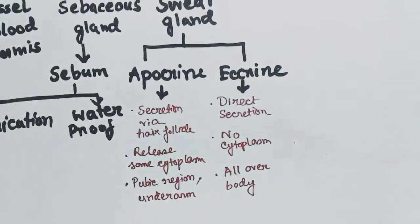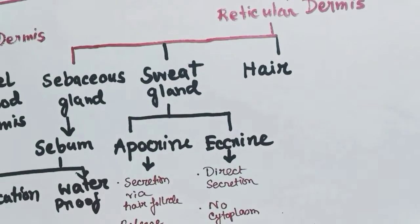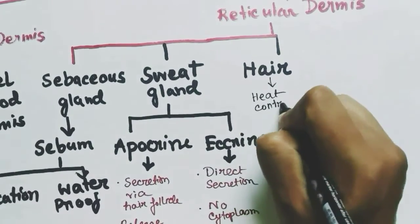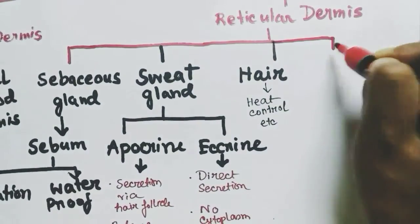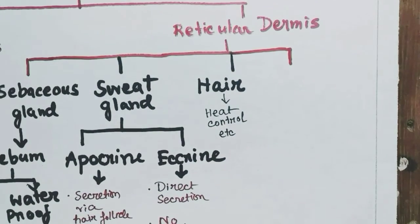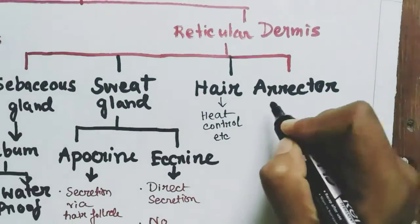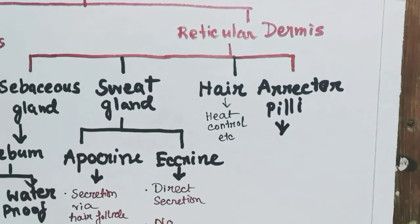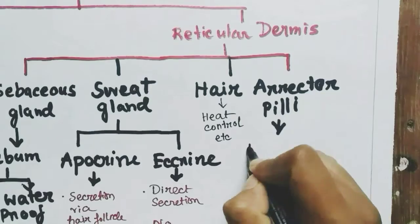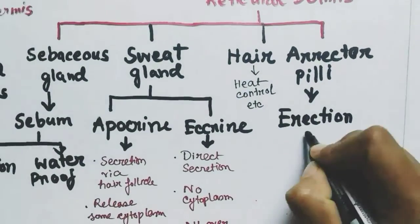The next component of the dermis is hair, which contributes to the heat control mechanism. Another component of the reticular dermis is the erector pili muscles, which are connected to the hair follicle and help in the erection of the hair during goosebumps.